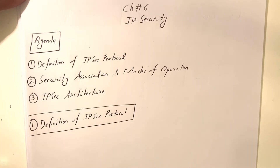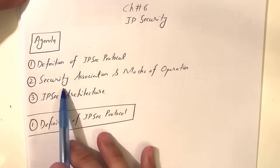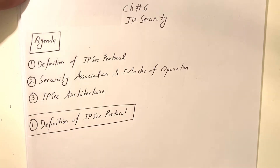We have three agenda items in this chapter. First, we'll discuss the definition of IPsec protocol — what it is, its functionalities and services, and how we can implement it in our existing network. Then we will discuss security association, its role in IPsec, and how it can be implemented.